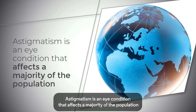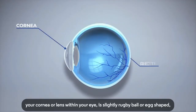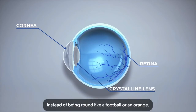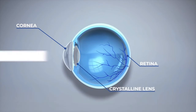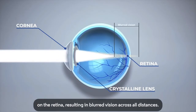Astigmatism is an eye condition that affects a majority of the population. It occurs when the surface of your eye — your cornea or lens — is slightly rugby ball or egg shaped instead of being round like a football or an orange. When light enters the eye it meets at more than one point on the retina, resulting in blurred vision across all distances.